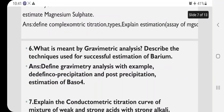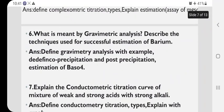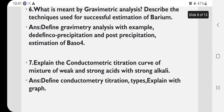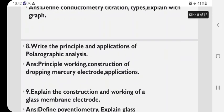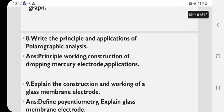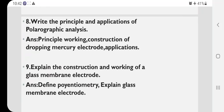What is meant by gravimetric analysis? Describe the techniques used for the estimation of barium or barium sulfate. Next, explain the conductometric titration curve of the mixture of weak and strong acids with a strong alkali. That is strong acid and strong alkali means here base. Write the principle and application of the polarographic analysis. Principle working construction of the dropping mercury electrode. Very simple. Or that is polarographic analysis means you have to write the construction of dropping mercury electrode with the application.